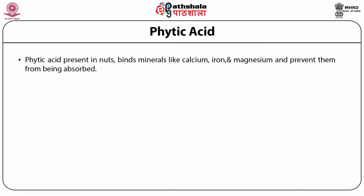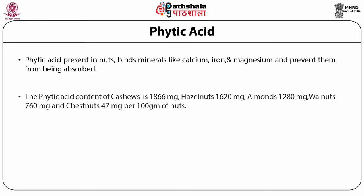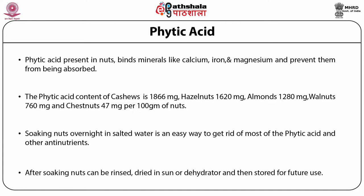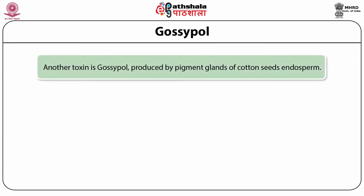Phytic acid is an anti-nutritional factor present in nuts that binds minerals like calcium, iron, and magnesium and prevents them from being absorbed. The phytic acid content per 100g is: cashews 1866 mg, hazelnuts 1620 mg, almonds 1280 mg, walnuts 760 mg, and cashew nuts 47 mg. Soaking nuts overnight in salted water is an easy way to get rid of most of the phytic acid and other anti-nutrients. After soaking, they can be rinsed, dried in the sun or dehydrated, and then stored for future use.